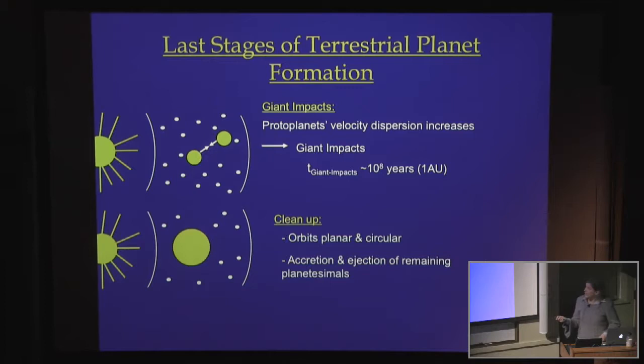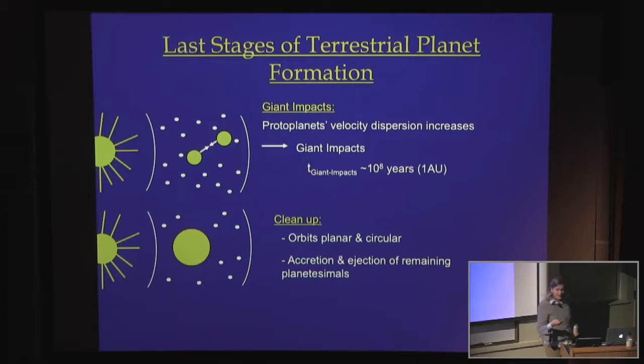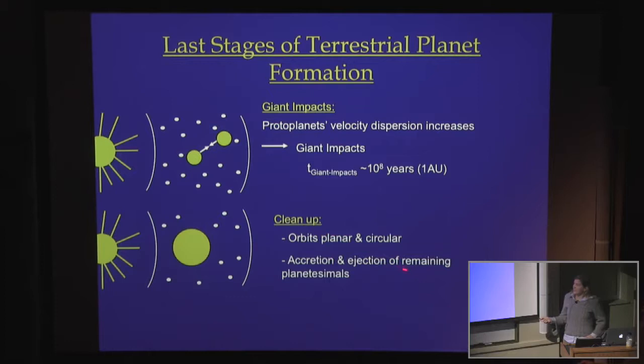Finally, there is one last stage of planet formation: the cleanup of the leftover material. This is often overlooked, but it's actually needed, especially if you had giant impacts, because you need something that can damp the eccentricities back to something close to circular. Today, if you look at the eccentricities of the terrestrial planets, they are very small — much smaller than you would expect at the end of giant impacts. The best agent for doing that is the leftover planetesimals that remained, because they reside there for a long time and are eventually cleared out by accretion or, in the outer solar system, by ejection.